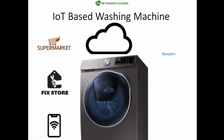The IoT washing machine will have a sensor to monitor the amount of washing powder. If the washing powder reduces to a certain level, it will automatically notify the nearby supermarket that the powder is exhausted, so the supermarket person will come to refill it. It will also have a sensor to monitor all the spare parts of the washing machine, and if any part is found to be faulty, it will automatically send a notification to the maintenance department of the brand.